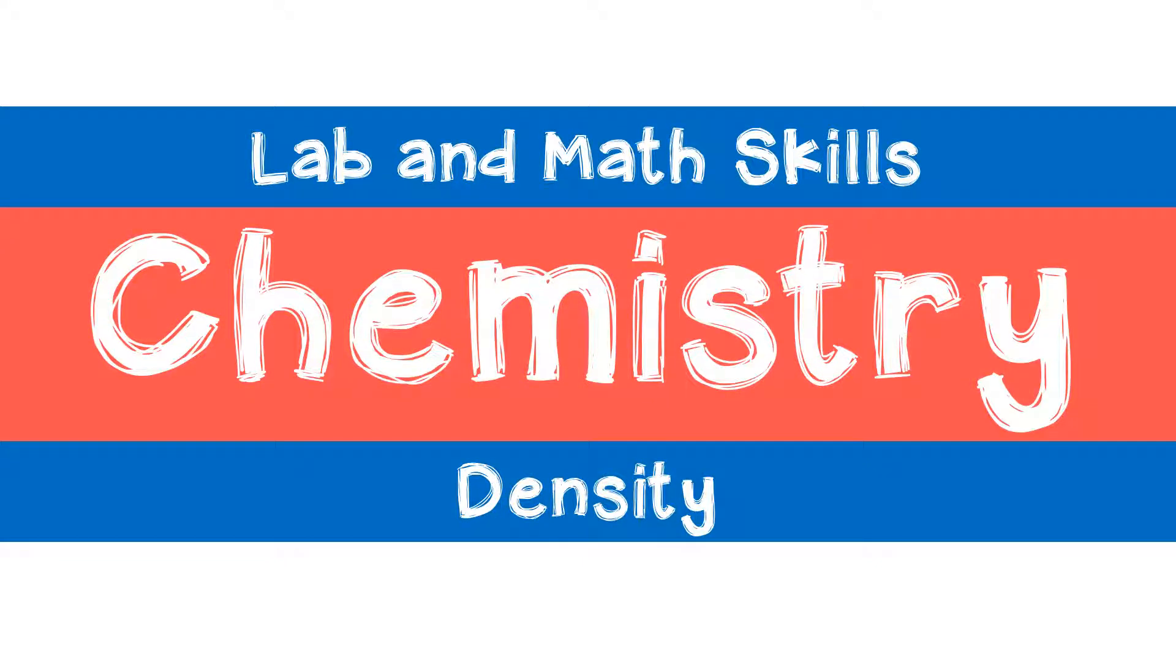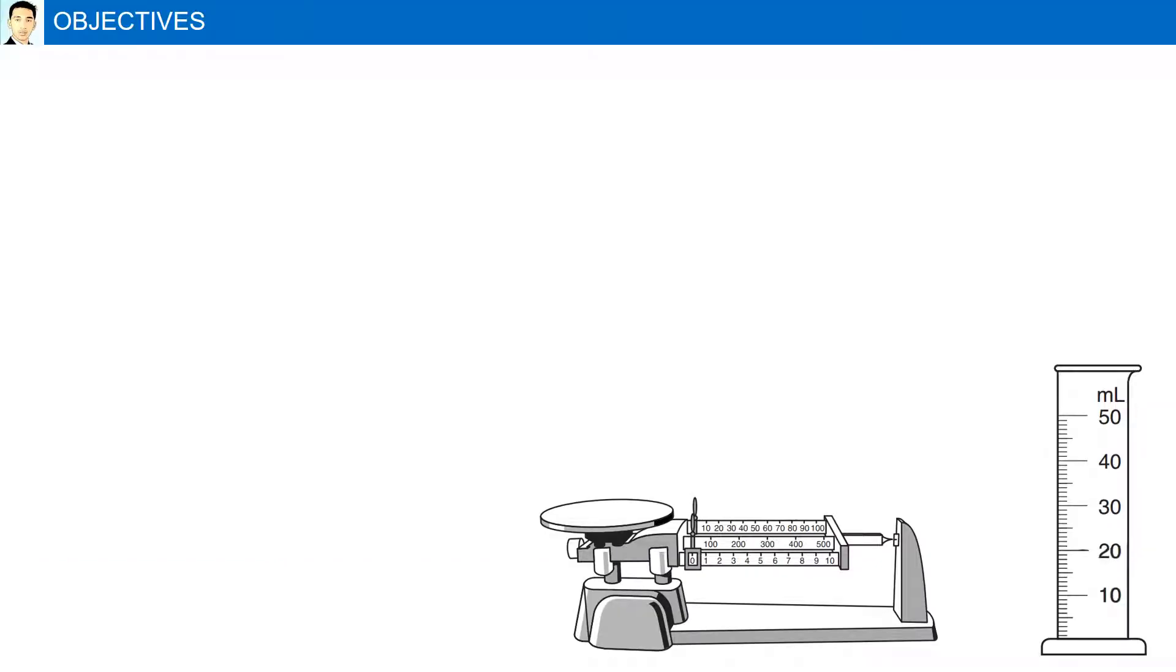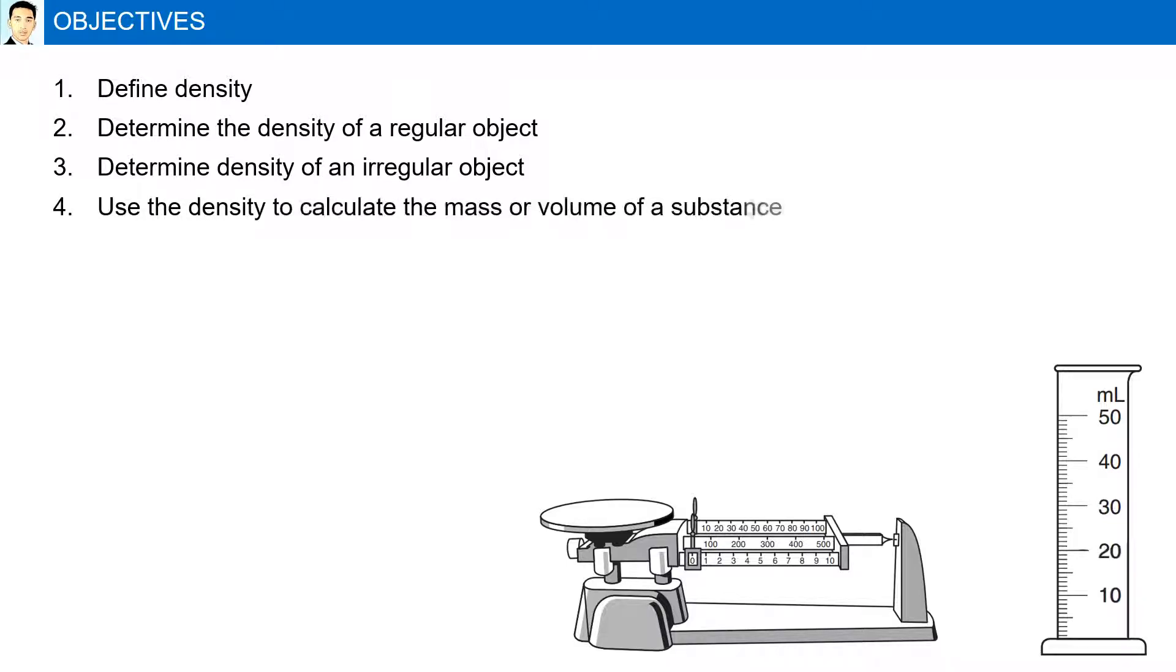Density. Objectives: Define density. Determine the density of a regular object. Determine the density of an irregular object. Use the density to calculate the mass or volume of a substance. And finally, explain why different forms of the same element can have different densities.